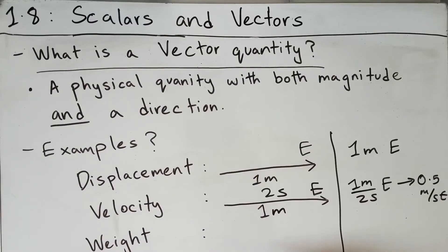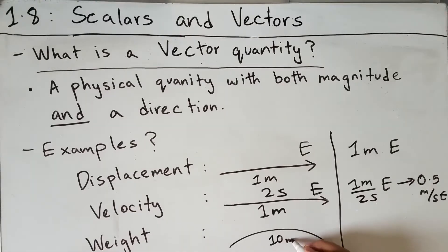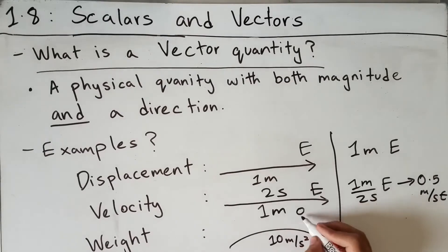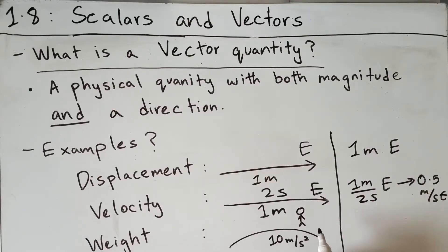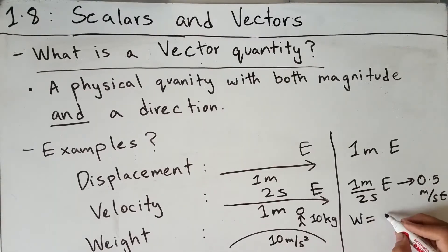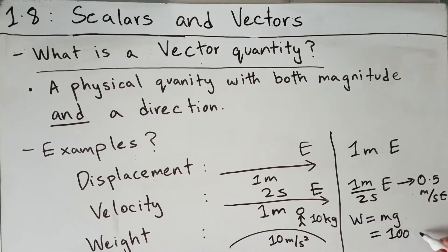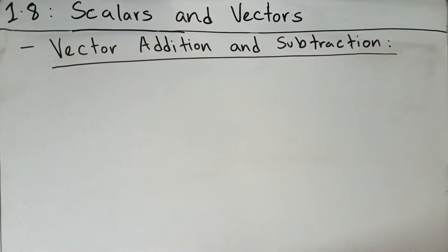Another example of a vector quantity is weight, which is the force the Earth pulls on you, proportional to the gravitational constant of 10 meters per second squared. If your mass is 10 kilograms, your weight equals mass times gravitational constant: 10 times 10 equals 100 newtons, directed downwards towards the Earth.